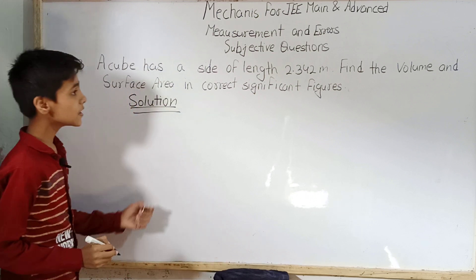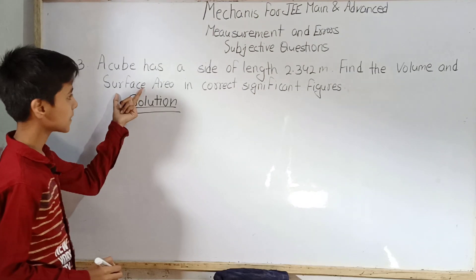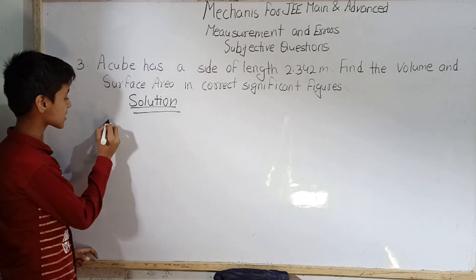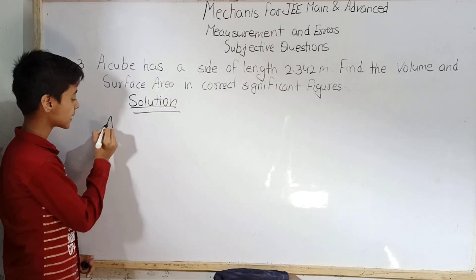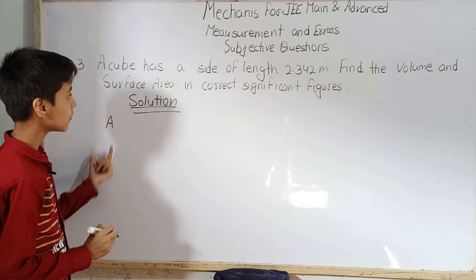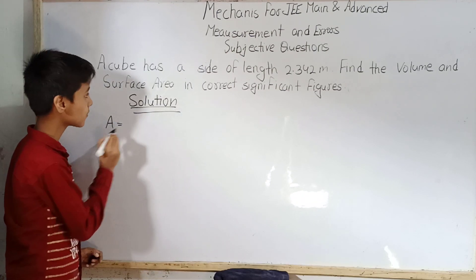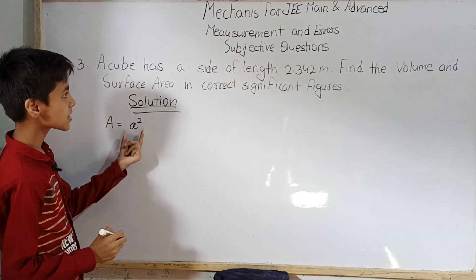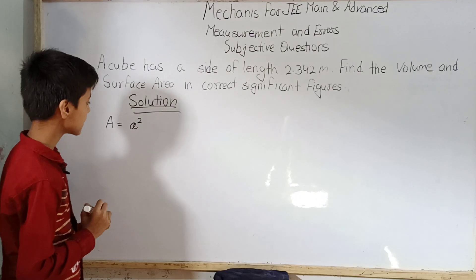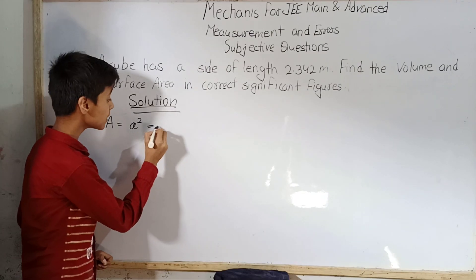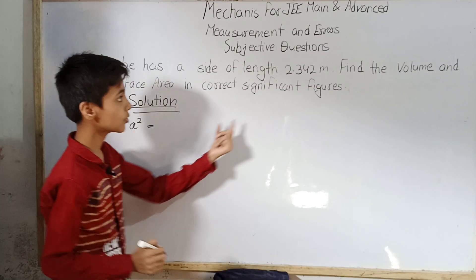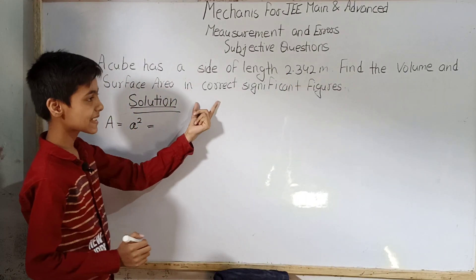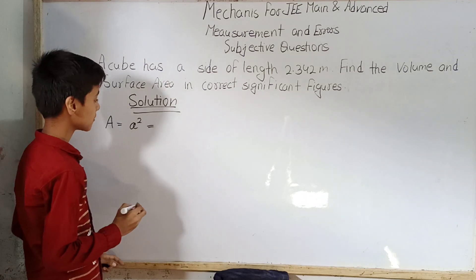First we'll find the surface area, and later we'll find the volume. Let us denote surface area by A. We know the formula for surface area of a cube is A equals side squared. The value of the side A is given as 2.342 meters.